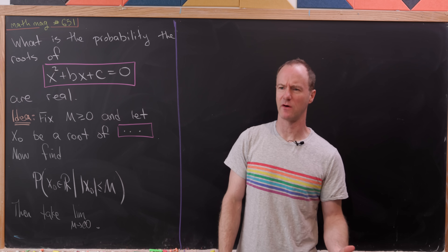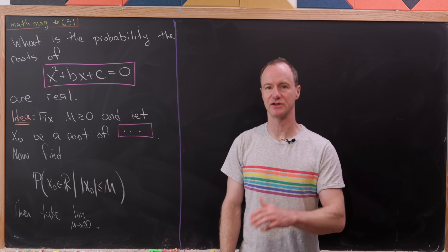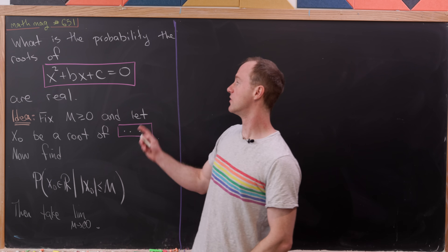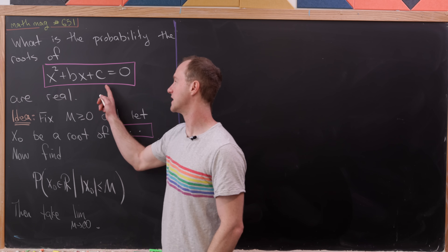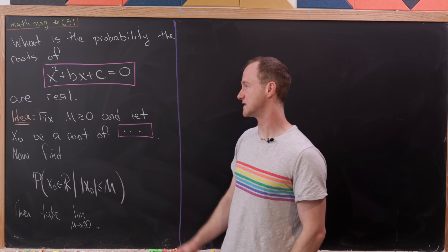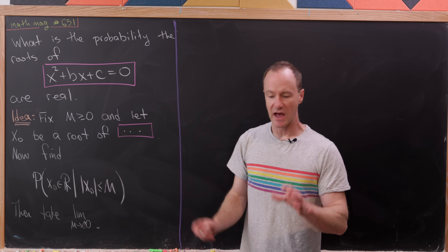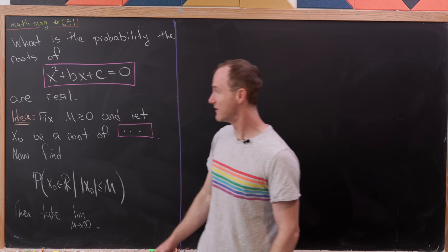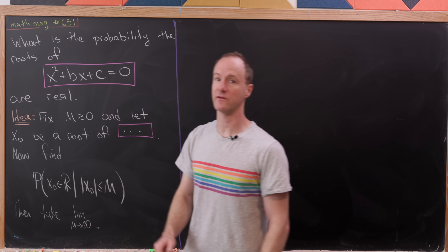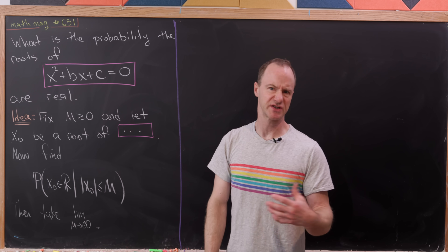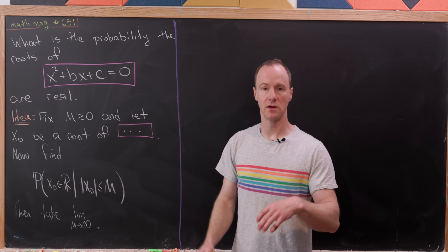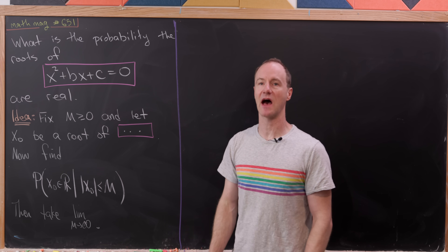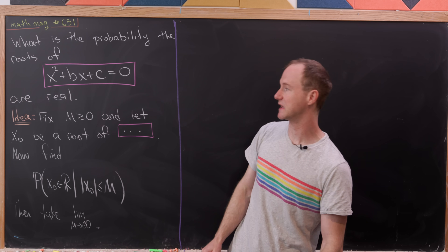Today we're going to look at a really interesting problem involving a quadratic equation and its roots. In particular, we're going to discover the probability that the roots of x² + bx + c = 0 are real. Notice this can be seen as a general quadratic equation — if we had an a in front of x², we could just divide by a to make it 1. Unless a = 0, of course, but then we'd have a linear equation, not a quadratic.